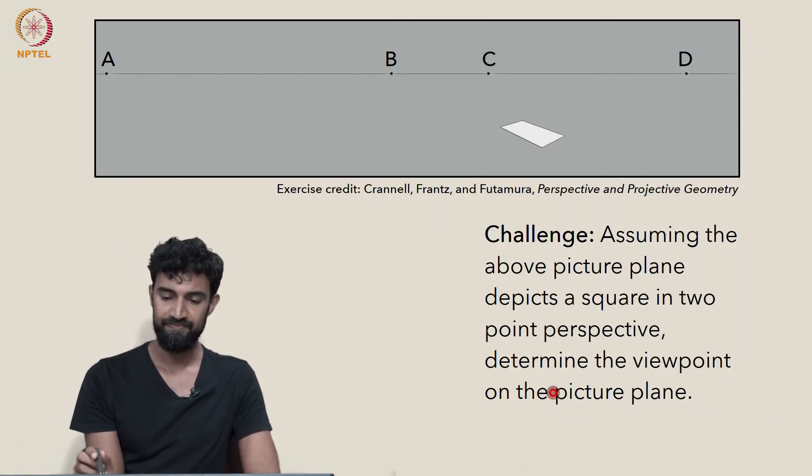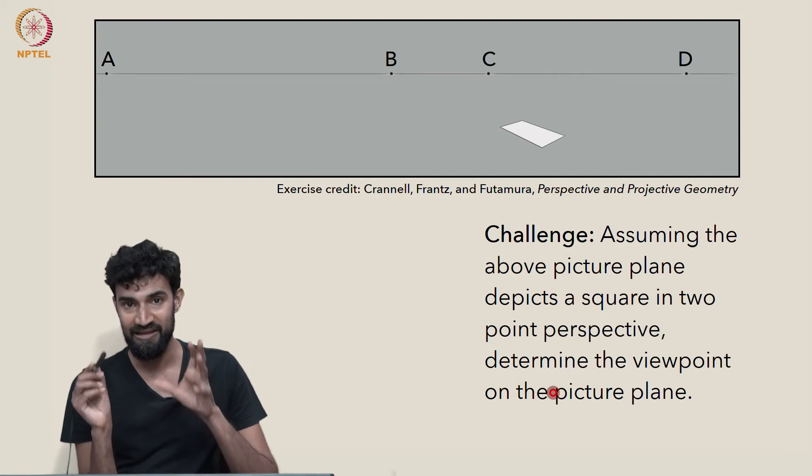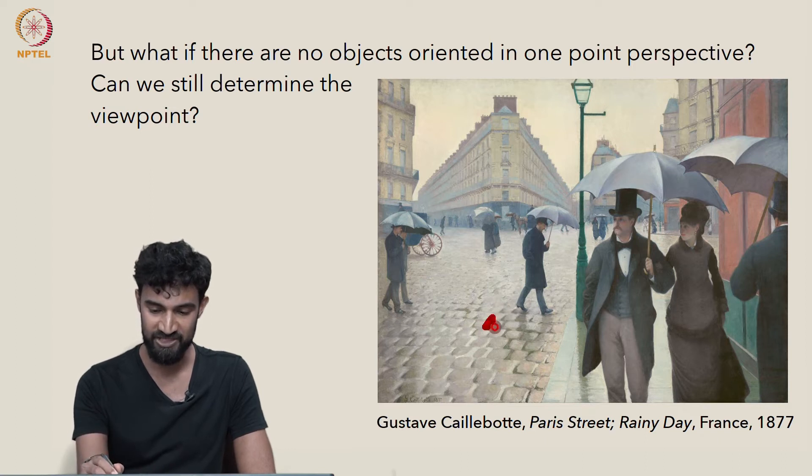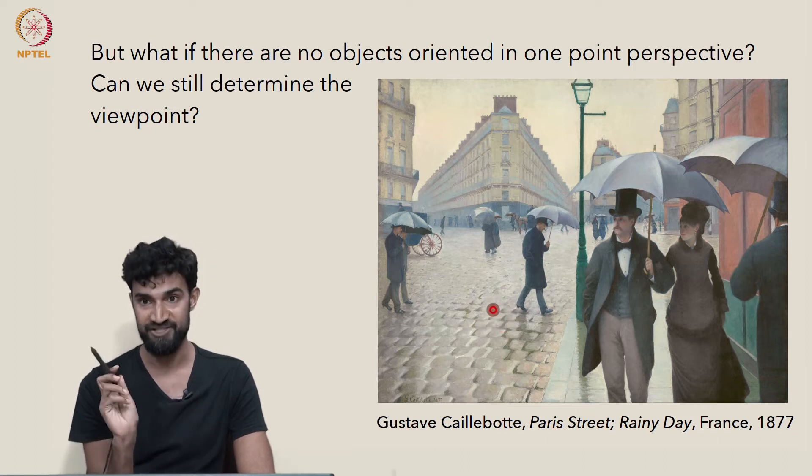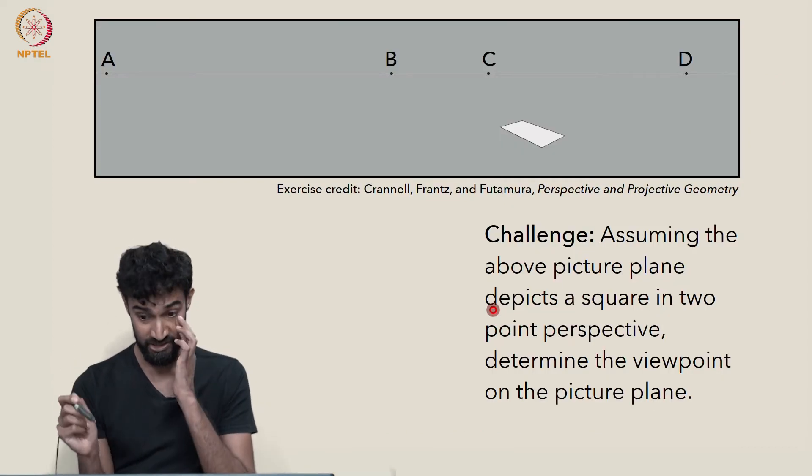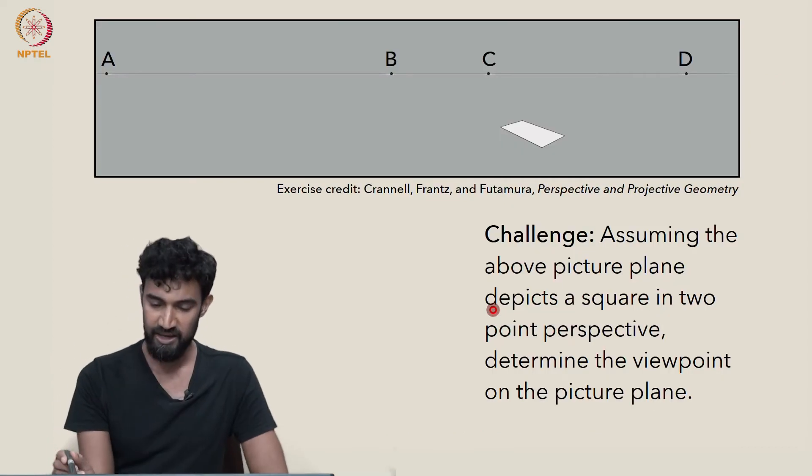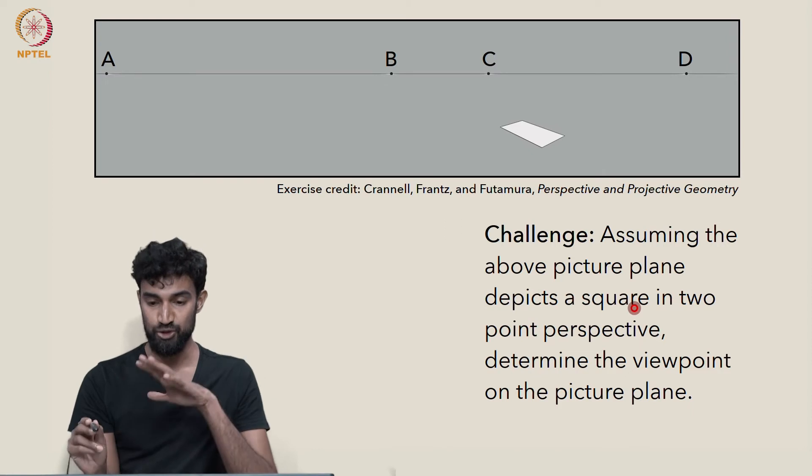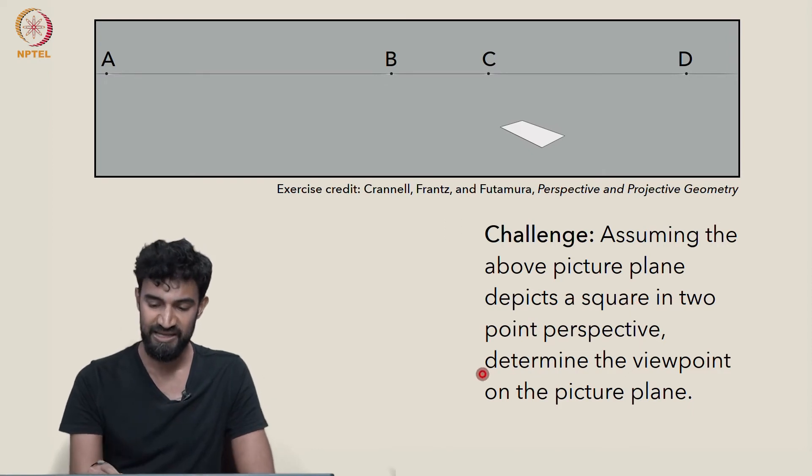On the other hand, if I claim that if we know some object in the painting depicts an actual square, like maybe one of these cobblestones, we know in real life it's a square, we can use that information to help us find the viewpoint. So as a challenge, assuming the above picture plane depicts a square in two point perspective, can we determine the viewpoint on the picture plane?